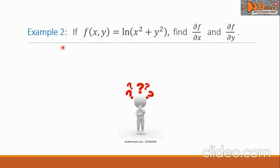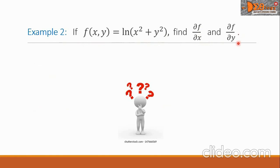Example 2. If f(x, y) equals ln of the quantity x squared plus y squared, find the partial derivative of f with respect to x and the partial derivative of f with respect to y.